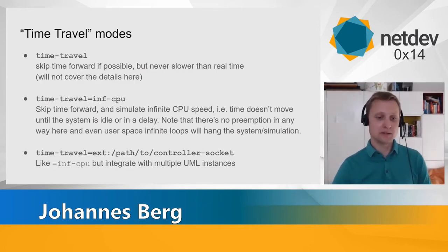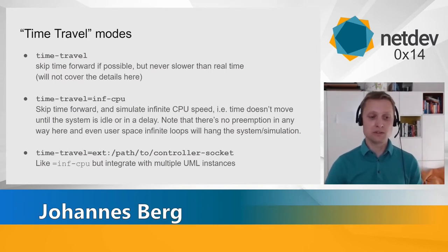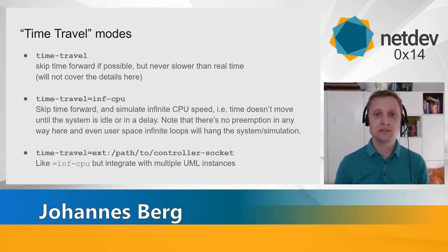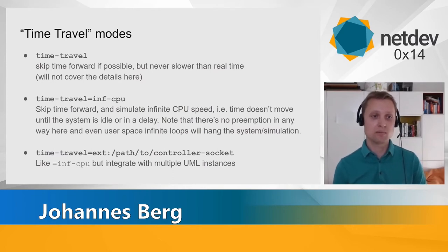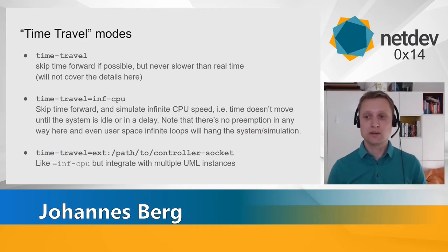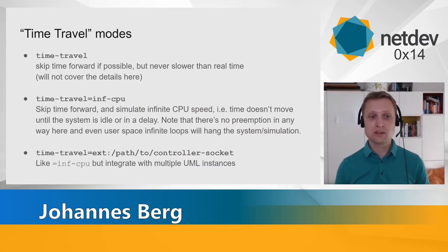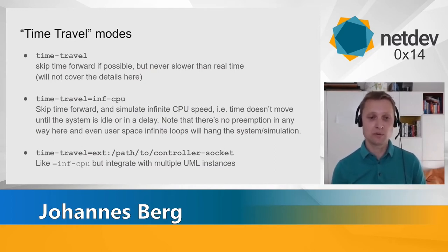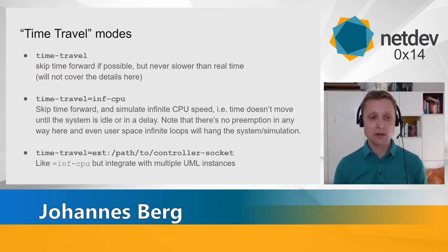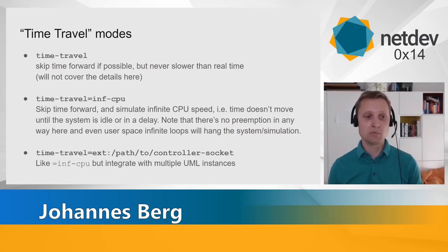So how do we implement this? We implemented three time travel modes in User Mode Linux. The first is simply called "time travel" — it will skip time forward if it gets to idle, but will never be slower than real time. It arms timers so you get a tick every 10 milliseconds. A lot of the advantages I mentioned before don't apply in this mode, since time keeps ticking even if you're stopped in the debugger.